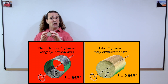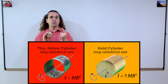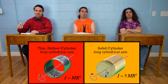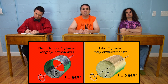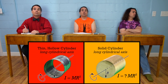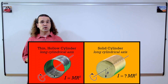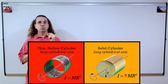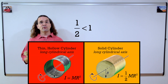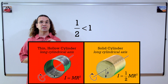Now let's move on to the moment of inertia of a solid cylinder about its long cylindrical axis. Bobby, how does the fraction for the solid cylinder compare to that for the thin hollow cylinder? Because the cylinder is solid, more of its mass is closer to the axis of rotation than for the thin hollow cylinder, so the moment of inertia should be less. Therefore the fraction for the solid cylinder should be less than 1. The moment of inertia of a solid cylinder about its long cylindrical axis is one-half MR². One-half is less than 1, confirming this reasoning.